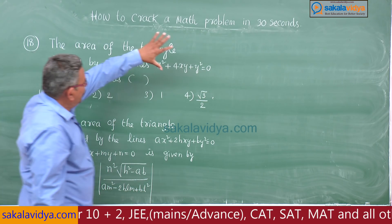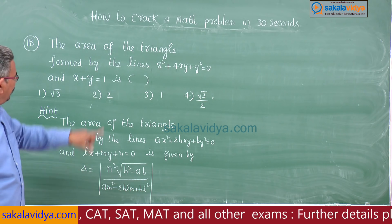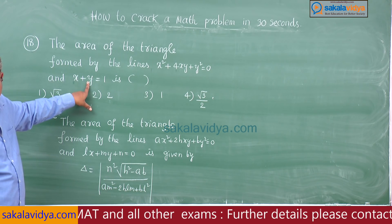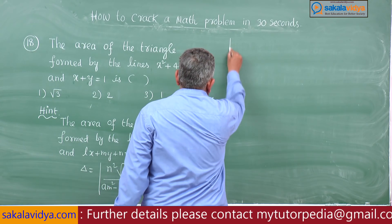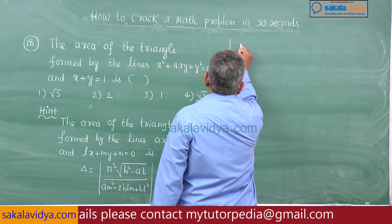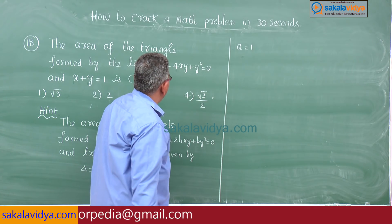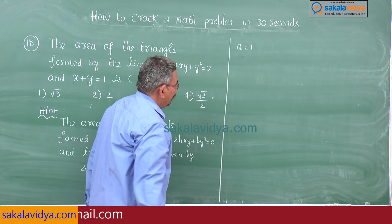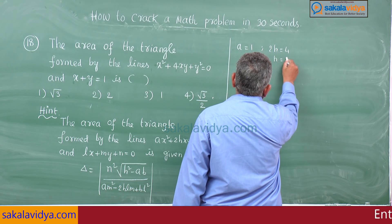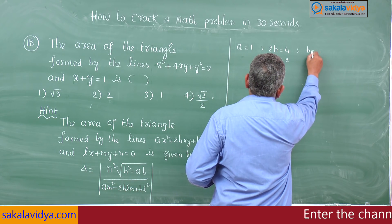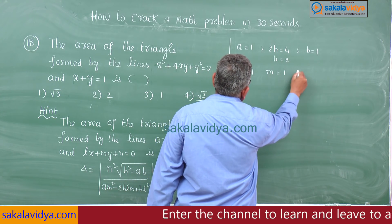Delta = |n²√(h² − ab)| / |am² − 2hlm + bl²|. In order to evaluate this, we require 6 values: a, h, b from the pair of lines and l, m, n from the given line. Here a = 1, comparing to the standard form 2h = 4 so h = 2, b = 1, l = 1, m = 1, and n = −1.